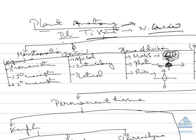The father of plant tissue is also known as Nehemiah Grew. Tissues are of two types: first is meristematic tissue — the tissue which keeps on dividing — and second is permanent tissue, also called non-dividing tissue. Meristematic tissues are divided into several types on different bases. First, on the basis of origin.